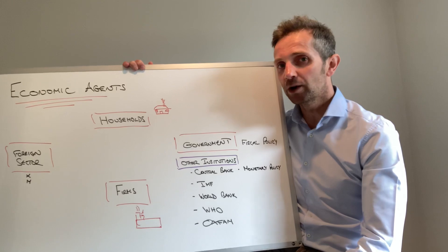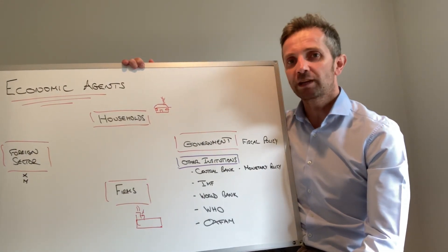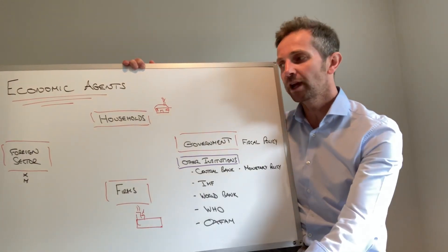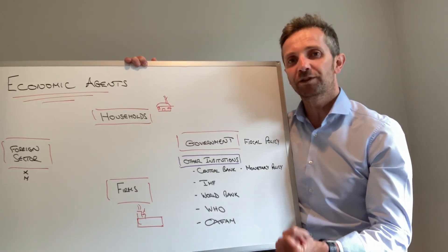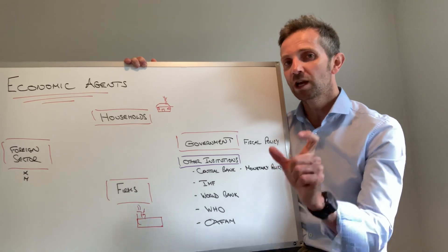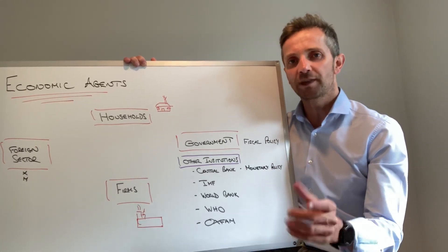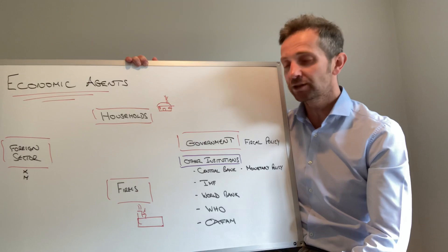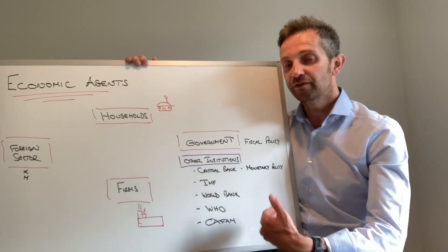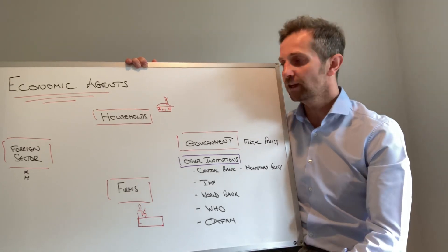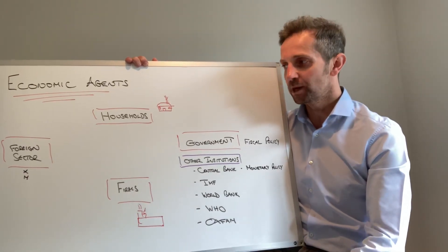Thirdly, we think about the foreign sector — goods leaving the country and goods coming into the country. Those of you familiar with your aggregate demand equation will be familiar with the net exports component, that X minus M element. Therefore we're thinking about X and M: the value of goods and services leaving the country and the value of goods and services coming into the country.